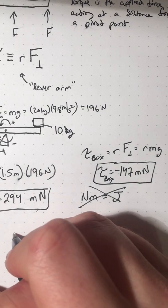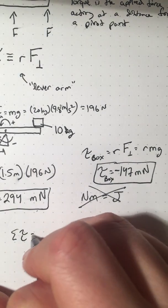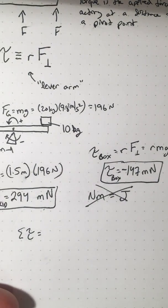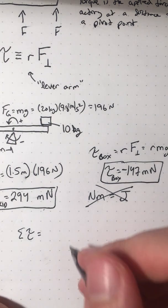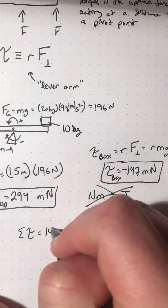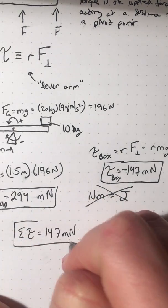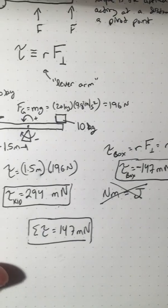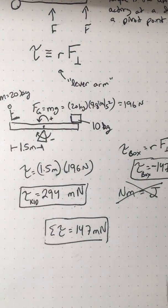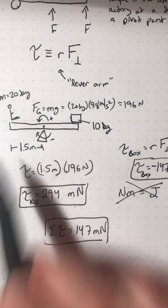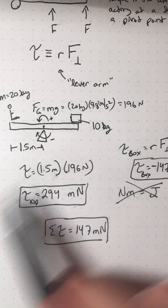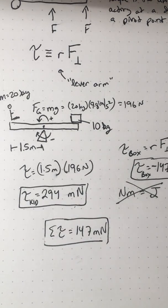So then I could say, what's the net torque or the sum of the torques? And you should see that the sum of torques is 294 minus 147, which in this case ends up being 147 meters newtons. But the idea is any torque that makes an object want to go counterclockwise is positive. Any torque that makes an object want to go clockwise is negative.